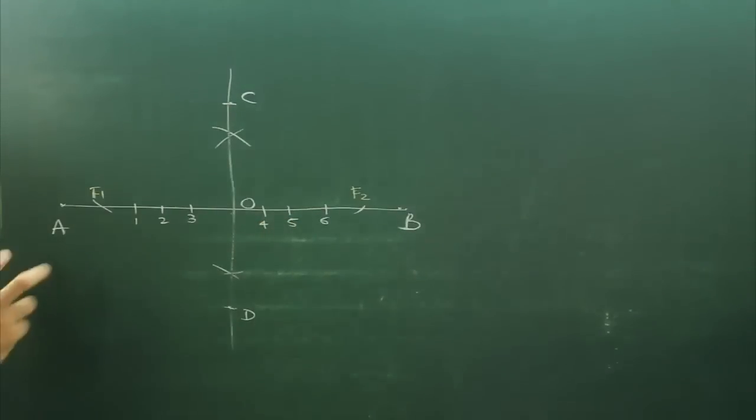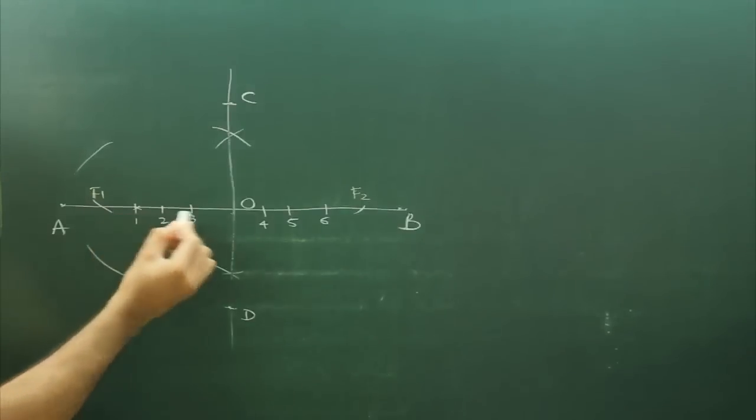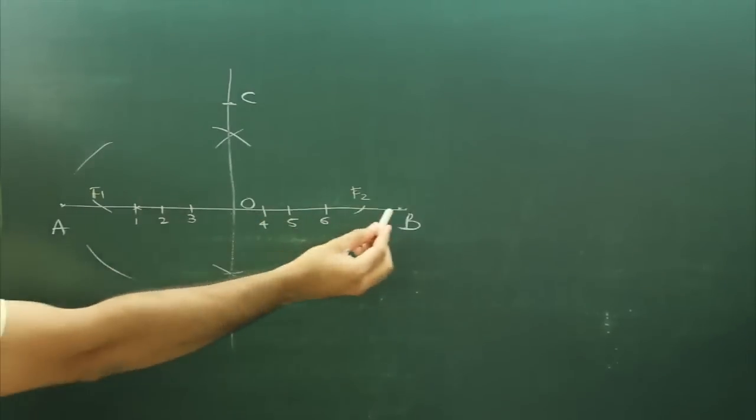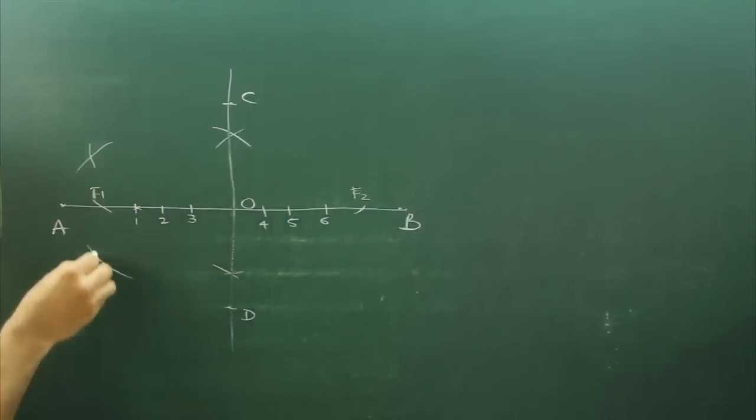After this you take A to 1 in your compass and from F1 you will cut up as well as down. Take A to 1 in your compass and from F1 you cut up as well as down. The remaining distance would be B to 1. So you take B to 1 in your compass and from F2 you cut up as well as down.